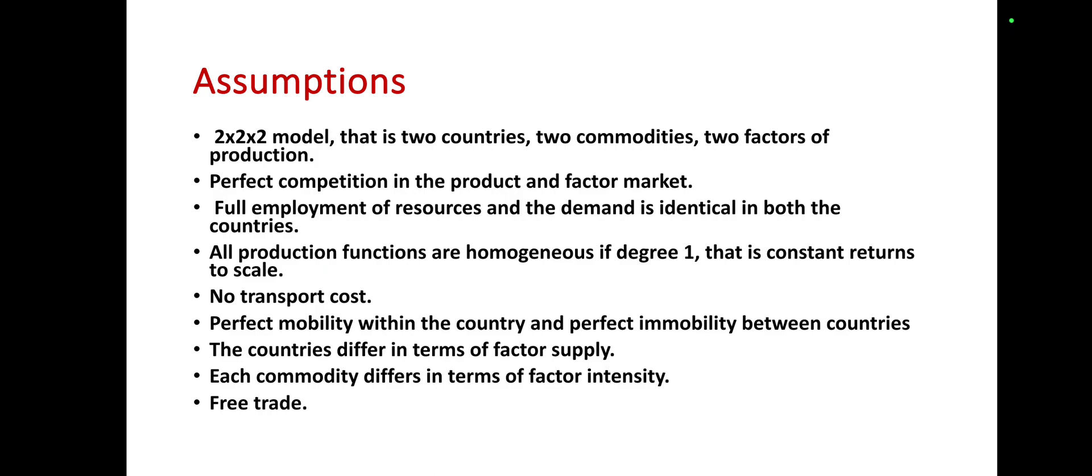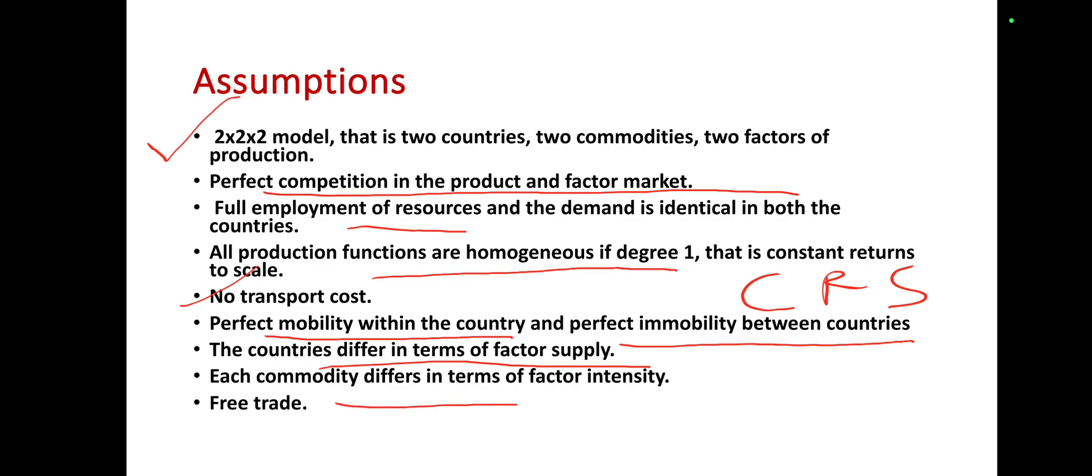Now, let us take a quick look at the assumptions. This is 2 into 2 into 2 model, perfect competition in product and factor market, full employment, all the production functions are homogeneous of degree 1 that is constant return to scale, no transport cost, perfect mobility within the country, perfect immobility between countries so the countries differ in terms of factor supply, each commodity differs in terms of factor intensity and free trade.